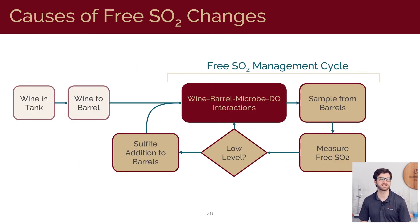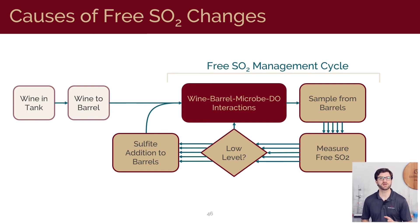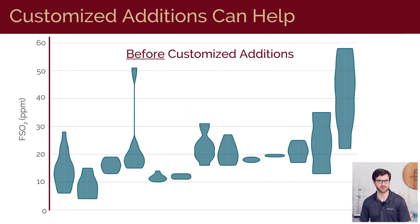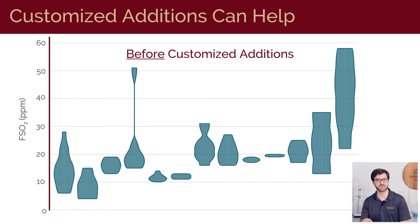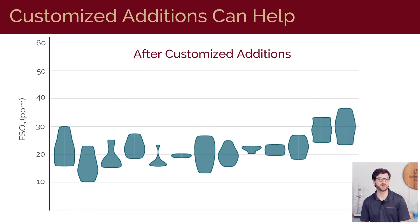We've seen how the information available can impact decision making in the free SO2 management cycle. Rather than propagating limited information through the cycle, if we instead consider more detailed sampling with accurate free SO2 measurements and barrel-by-barrel addition decisions, it's possible to maintain a tighter level of control on barrel variance. An example of this can be seen in this small premium winery for these 13 barrel groups. The winery employed a typical sulfite management program taking AO readings from a couple of barrels and making additions to all barrels based on these readings. In this study, we sampled each barrel individually and worked with the winemaking team to target specific barrels that required sulfite additions, leaving barrels alone that did not require any. You can see that this resulted in much more consistent levels across all of the barrel groups, bringing all barrels closer to their respective set points.